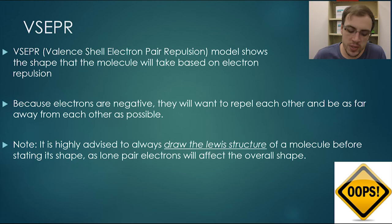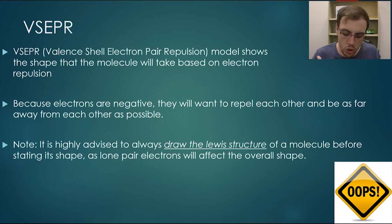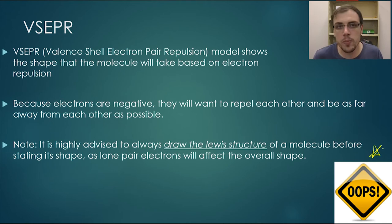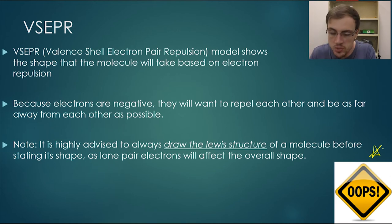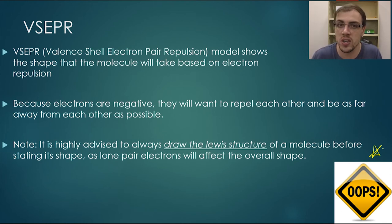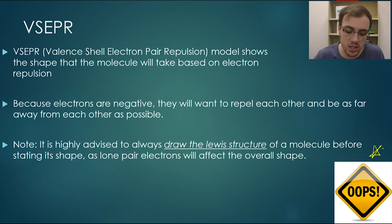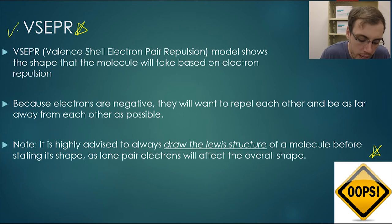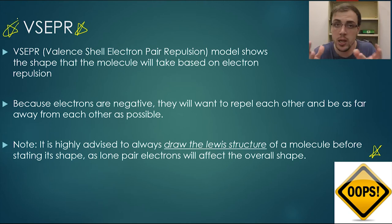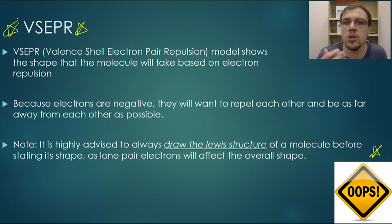When you are using VSEPR to determine the overall shape of a molecule, it is highly advised that you draw the Lewis structure first. This is where a lot of students go wrong — they try to look at a chemical formula and jump straight to the VSEPR, saying oh it's this shape, before drawing out the Lewis structure first. And more often than not, they get it wrong. Always draw the Lewis structure first — cannot emphasize that enough.